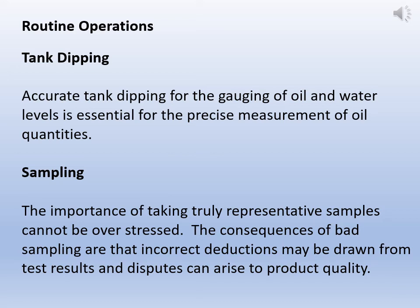Next is sampling. Sampling is very important before exporting or transferring to another point. A sample must be taken and checked against the specification mentioned for that particular crude oil batch. The importance of taking fully representative samples cannot be overstressed. The consequences of bad sampling are that incorrect deductions may be drawn from the test results and disputes can arise over product quality.